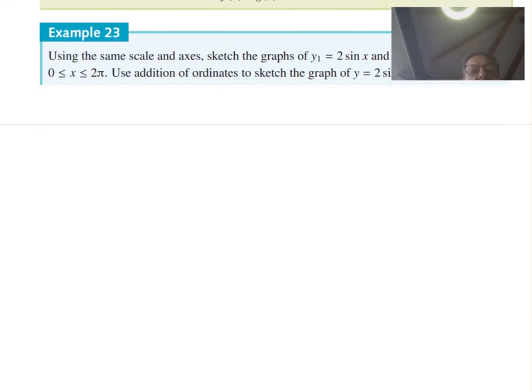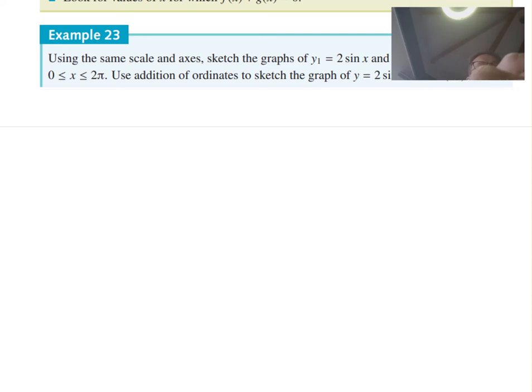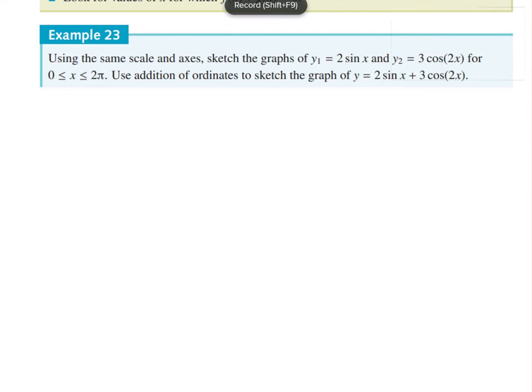Scrolling up the page here, using the same scale and axis, sketch the graphs of y equals 2 sin x and y equals 3 cos 2x. So let's sketch those individually. I'm just going to go straight for my axis here. I've looked at my domain, it says it's between 0 and 2π. Nice big axis there, x.